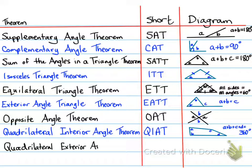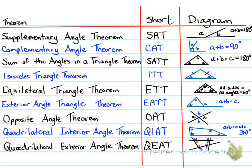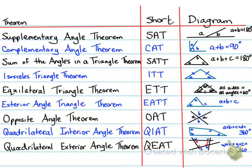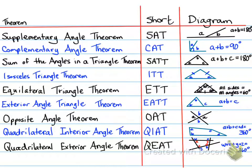The Quadrilateral Exterior Angle Theorem states that all the exterior angles of a quadrilateral add up to 360 degrees as well. These exterior angles are supplementary to the interior angles, and when you add them all up they equal 360 degrees. Later we'll develop a formula for any polygon, but for now we focus on triangles and quadrilaterals.